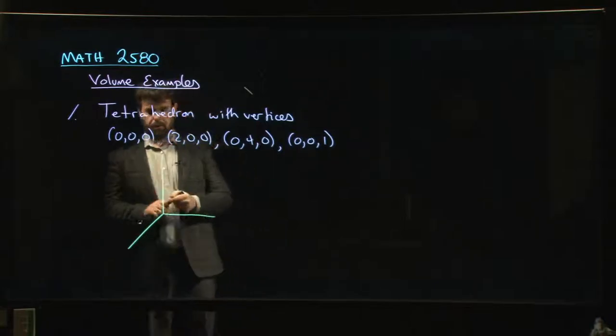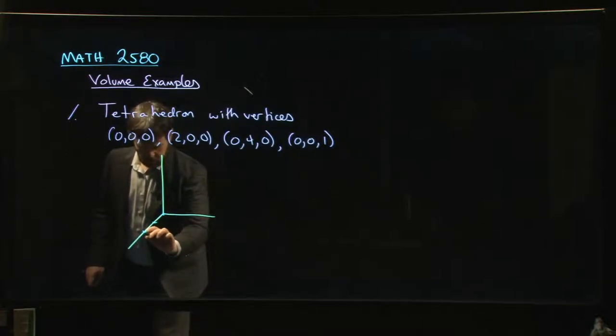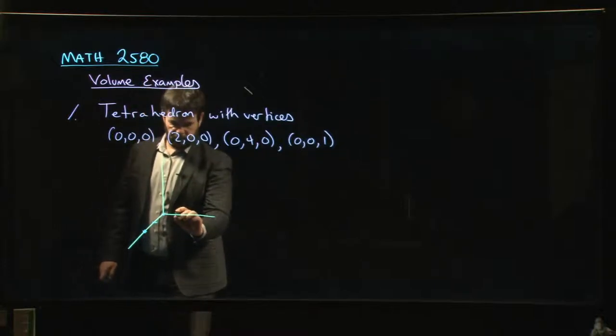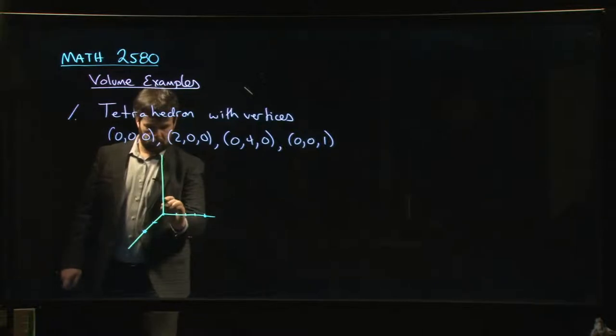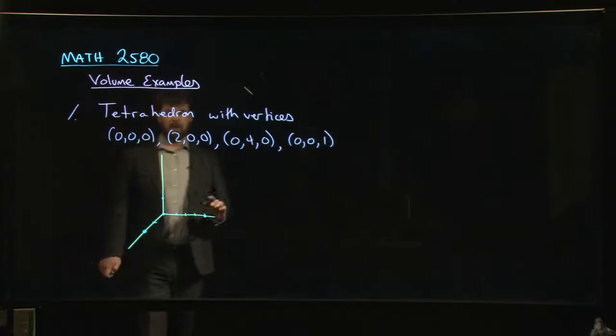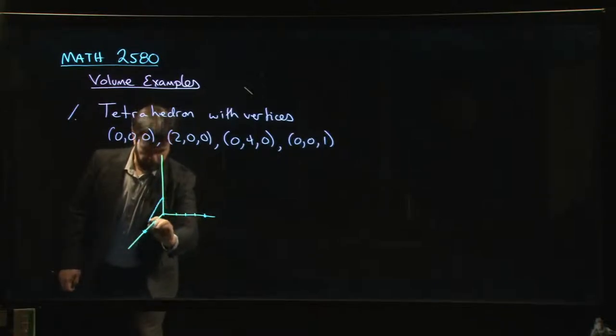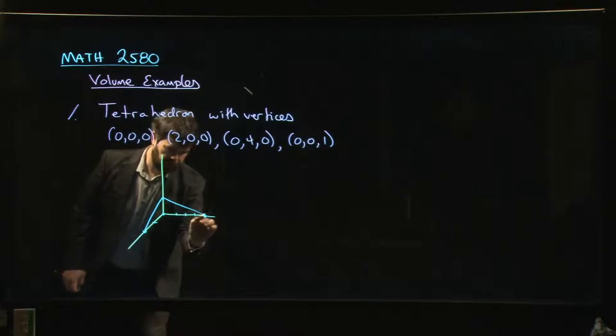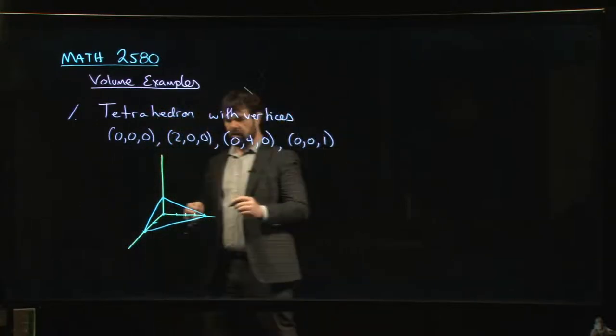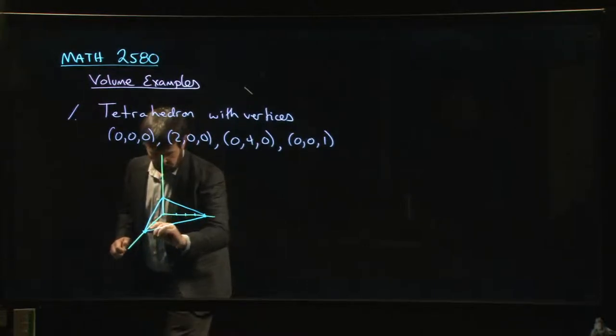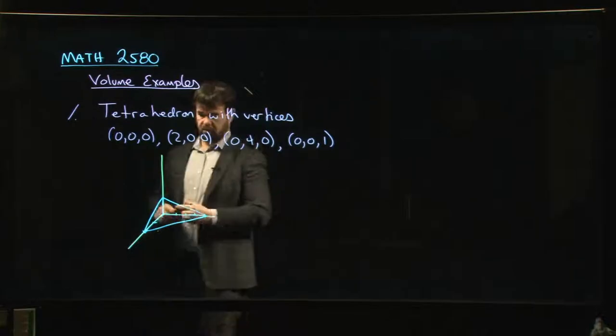Let's mark off these vertices. So we have the origin, we have the point (2,0,0), we have the point (0,4,0), and we have the point (0,0,1). So the way you form the tetrahedron is you join, you put edges between all of the points. So one edge there, one edge there, one edge there. And now you can probably get some idea of what this thing looks like. In fact, if we color in this bit here, you get some idea. So it's this sort of triangular object with the four vertices.